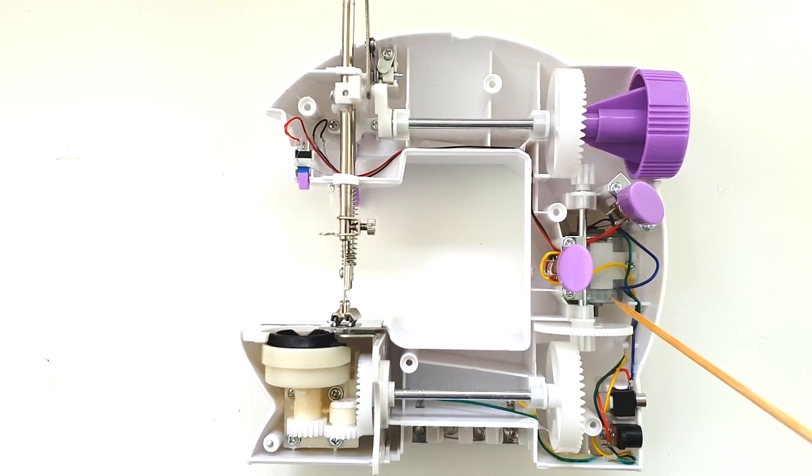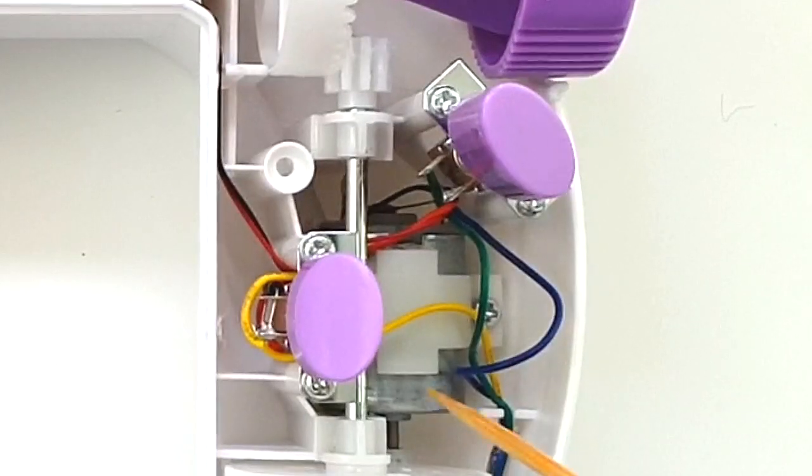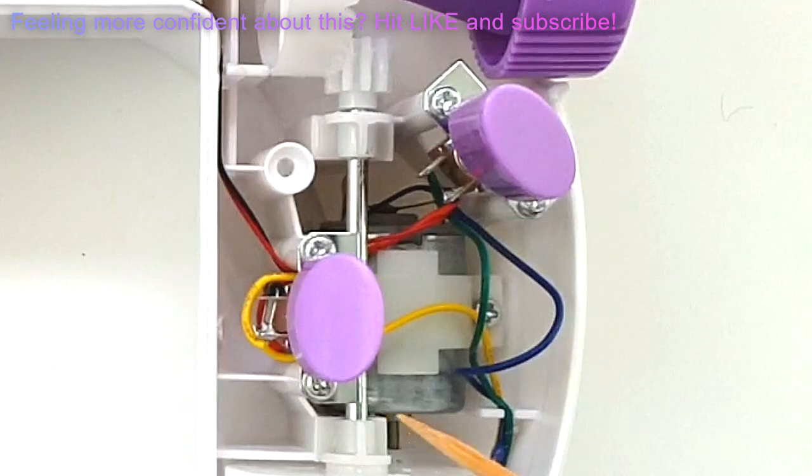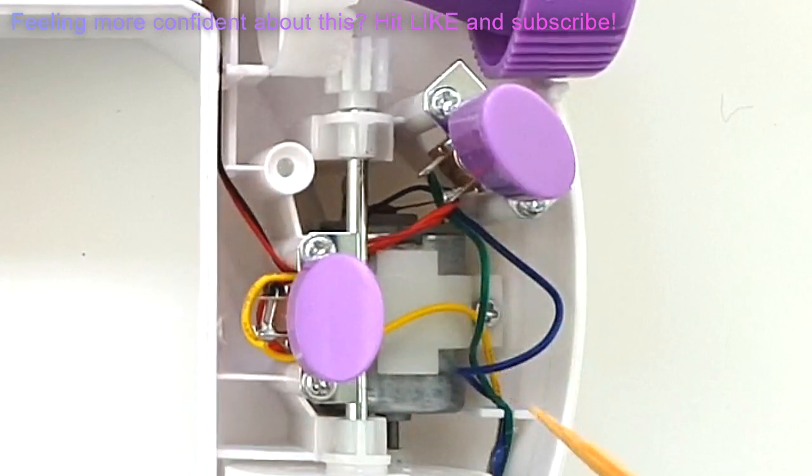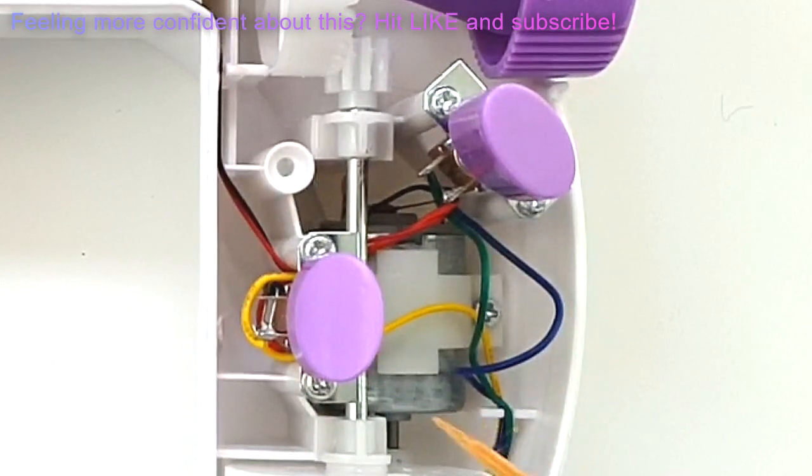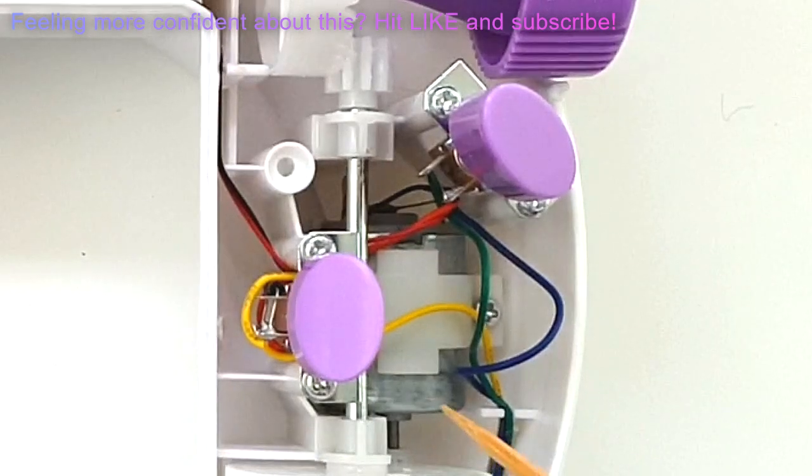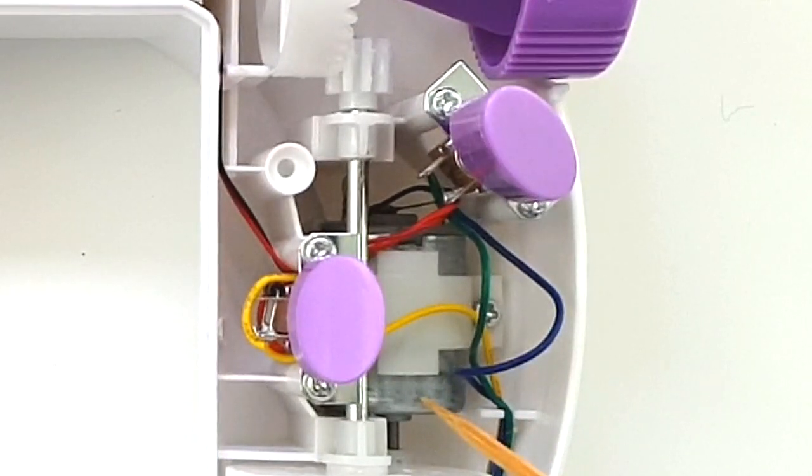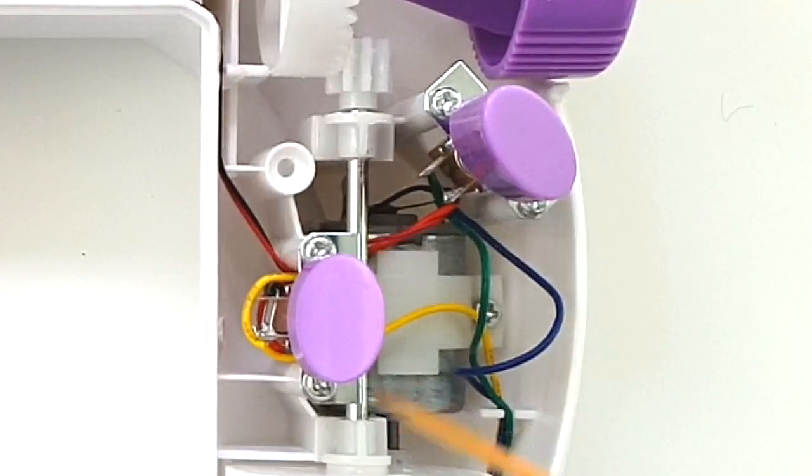Right there at the bottom, where my skewer is touching, that silver cylindrical thing, that's the electrical machine or the motor that runs the whole show. So when you switch on the machine and when you press the power button or the foot pedal, that silver cylinder gets electricity generated inside it, and that electricity then powers some gear mechanisms.